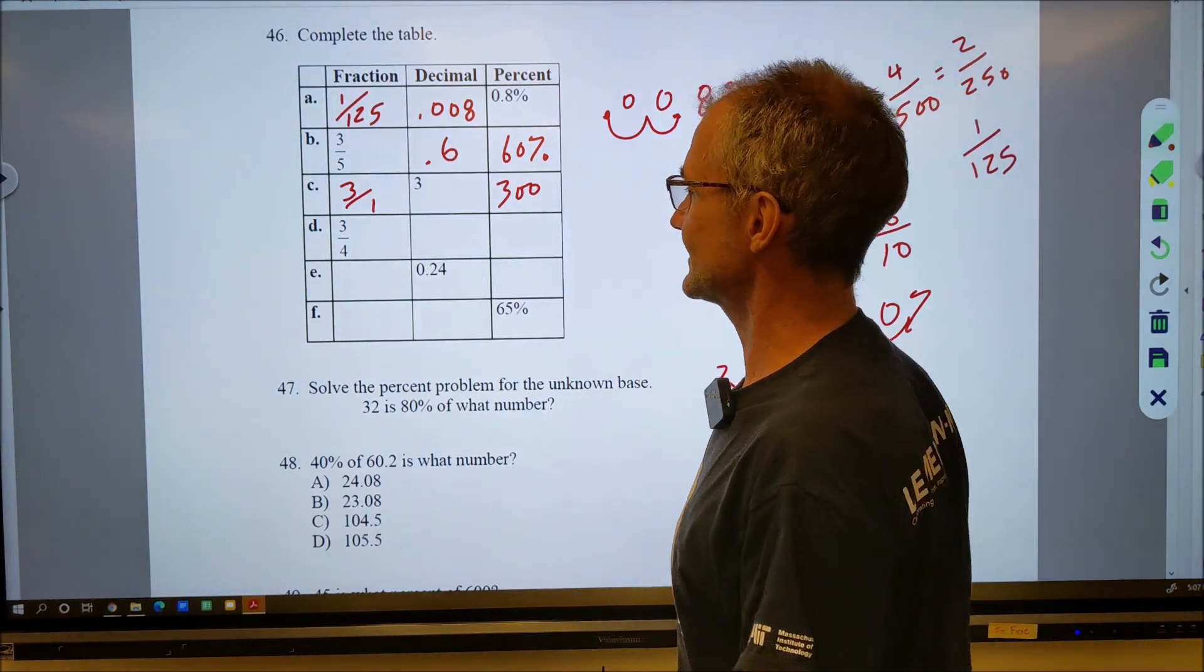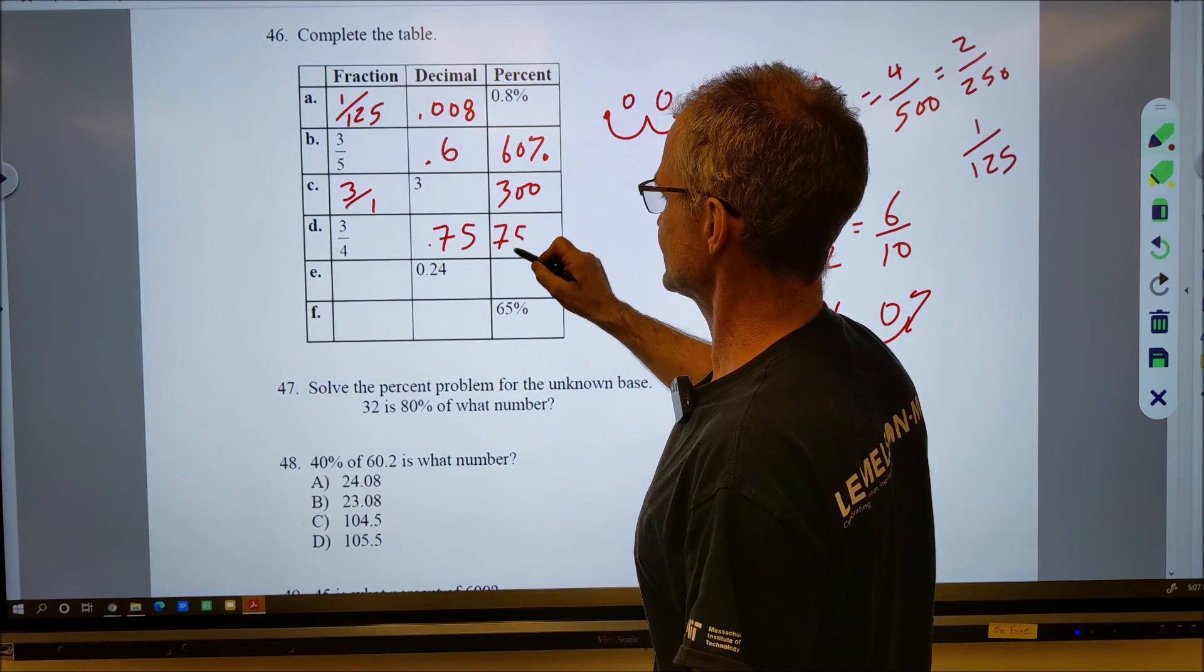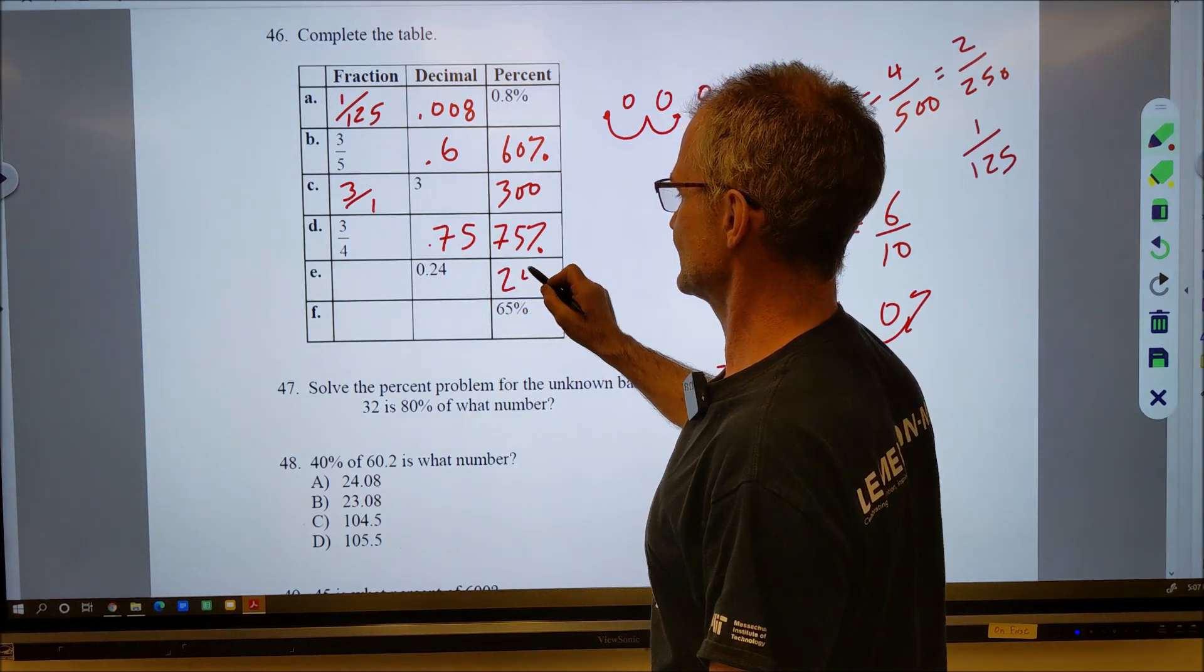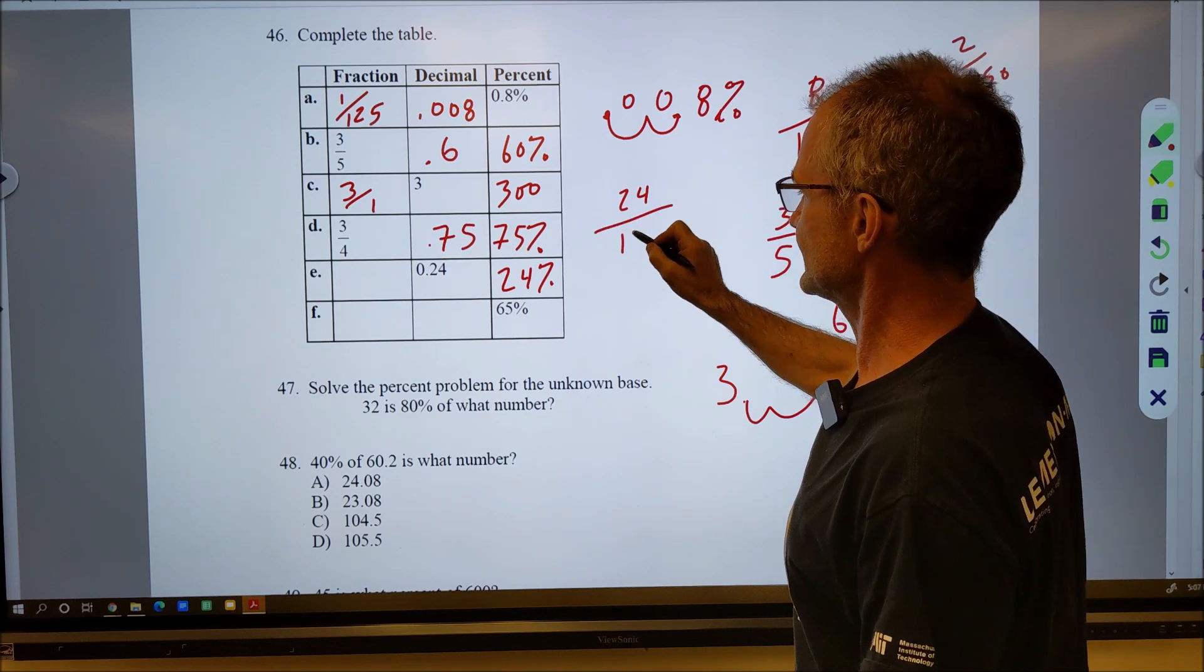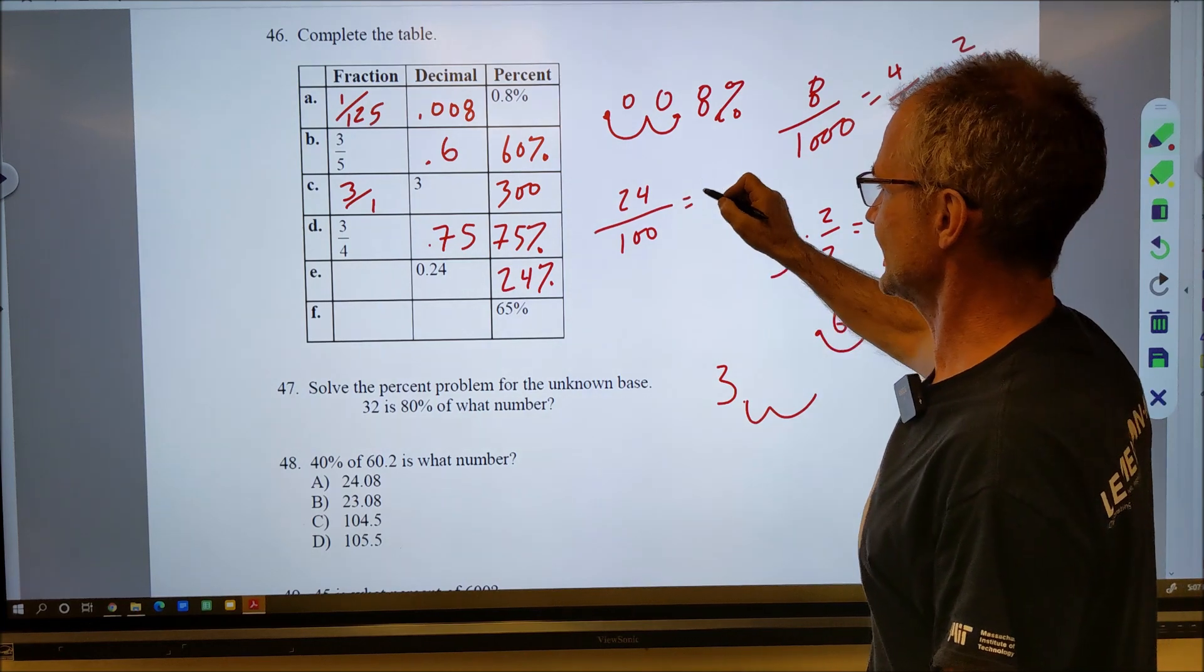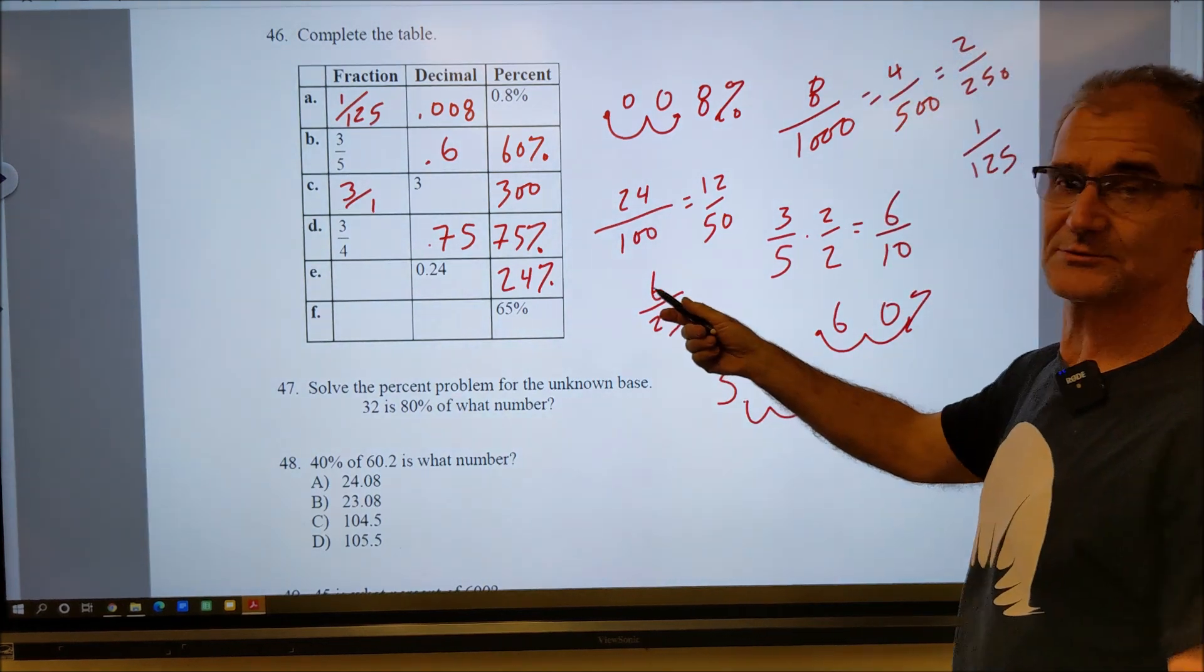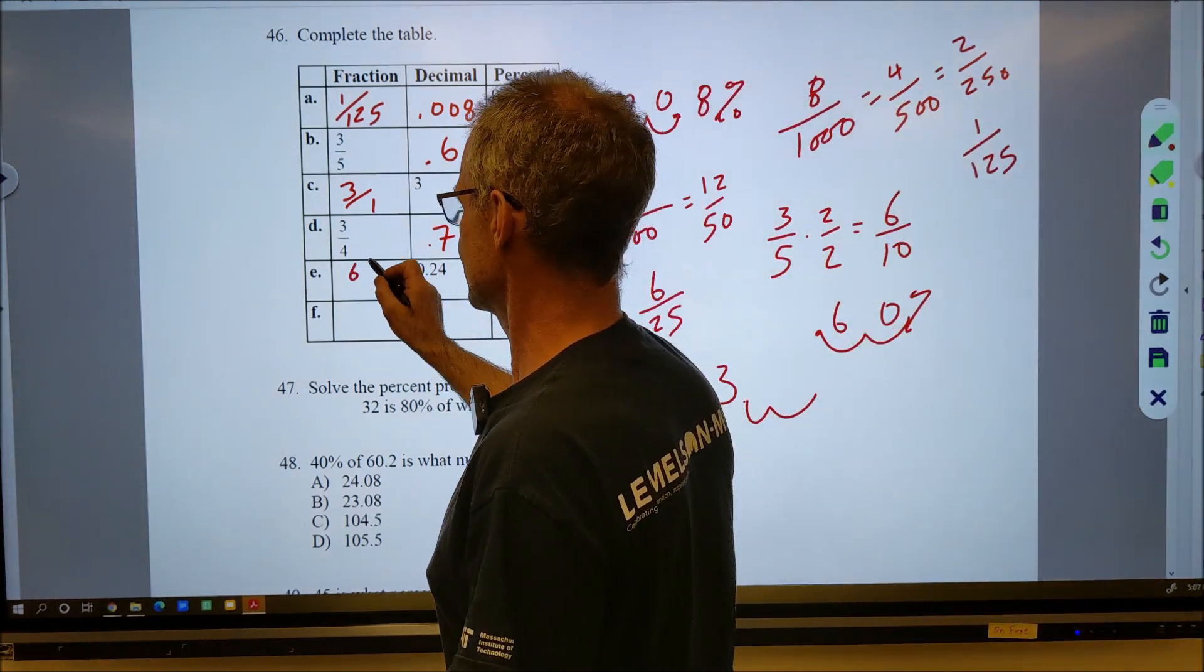3 quarters, maybe I recognize that as 0.75, and then as a percent, 75%. Part E, 0.24. To go over this way to a percent, 1, 2 would be 24%. As a fraction, it would be 24 one-hundredths. This is my tenths place, my hundredths place. They're both even. I'll cut them in half to get 12 fiftieths. I'll cut those in half to get 6 over 25. 6 is only divisible by 3, 25 is not, so that's reduced. So that's 6 twenty-fifths.